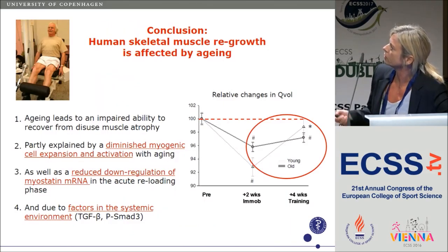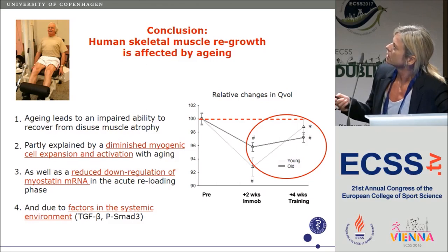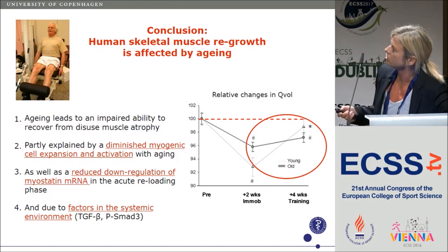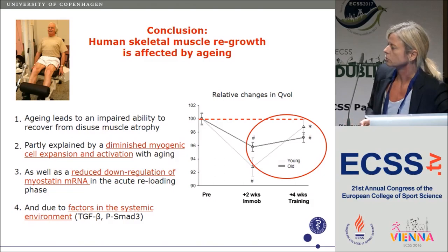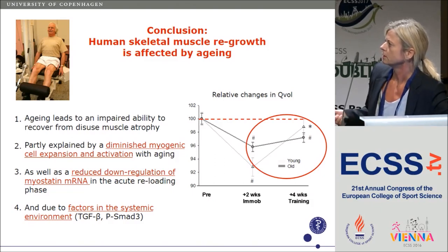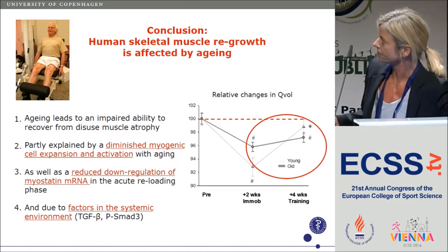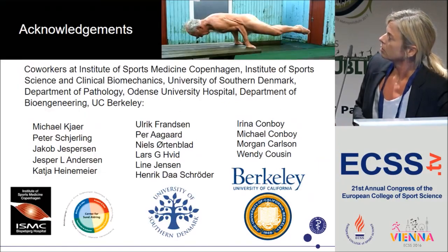To conclude on regrowth: human skeletal muscle regrowth is clearly affected by aging. There is an impaired ability to recover from disuse-induced muscle atrophy, partly explained by a diminished myogenic cell expansion and activation, a reduced down-regulation of myostatin, and systemic environmental factors — possibly TGF-beta or Smad3. Thank you.